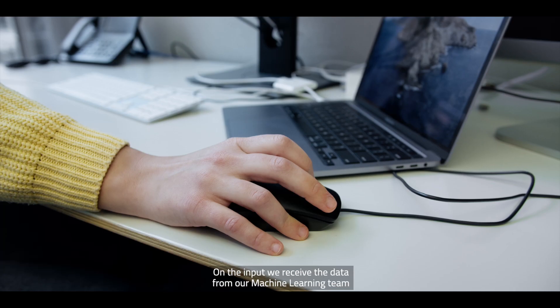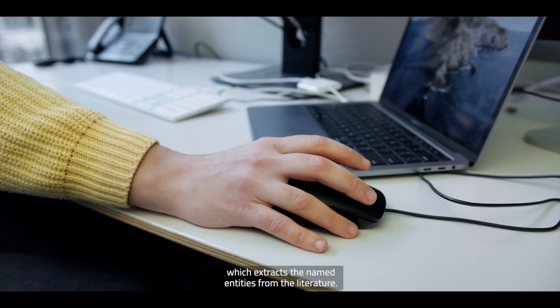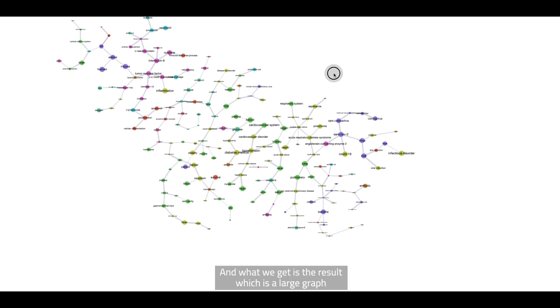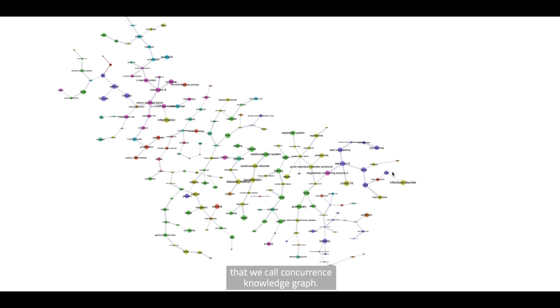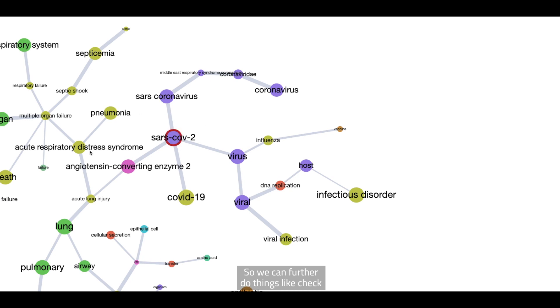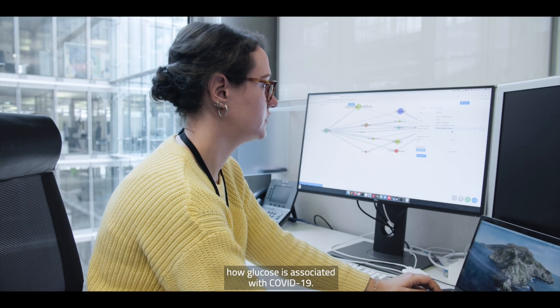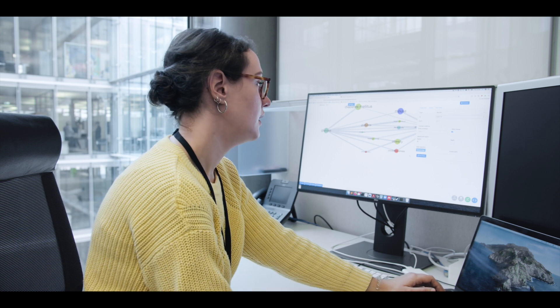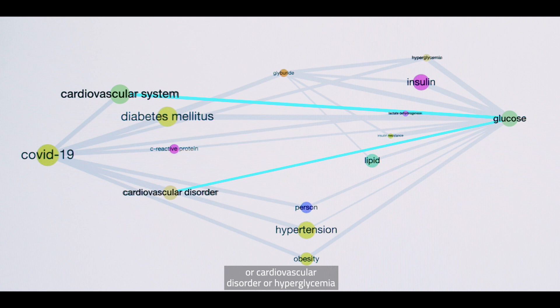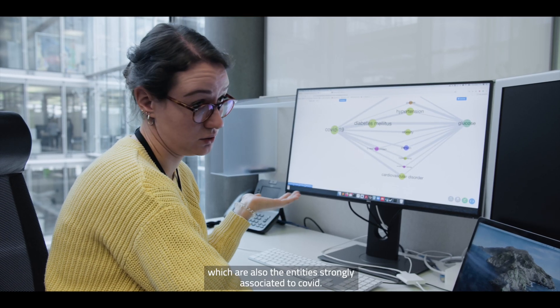On the input, we receive the data from our machine learning team, which extracts named entities from the literature. And what we get as a result is a large graph that we call Co-Occurrence Knowledge Graph. So we can further do things like we can check how glucose is associated with COVID-19. So we see how glucose is strongly associated with cardiovascular system or cardiovascular disorders or hyperglycemia, which also are the entities strongly associated to COVID.